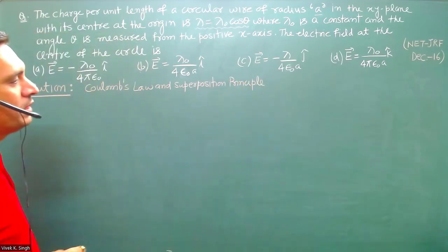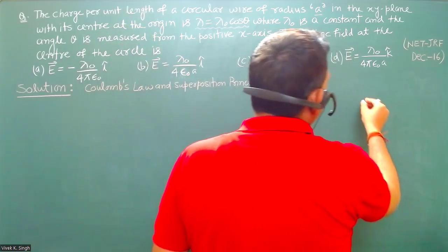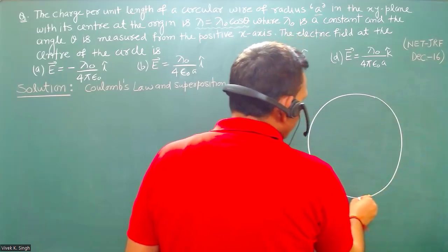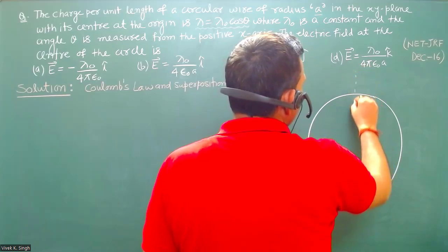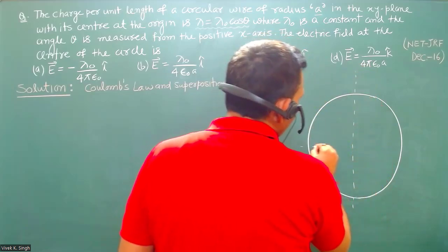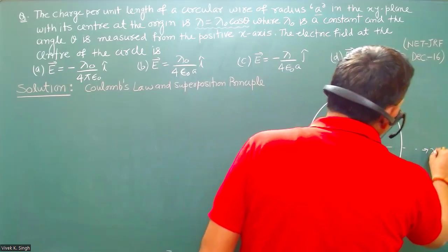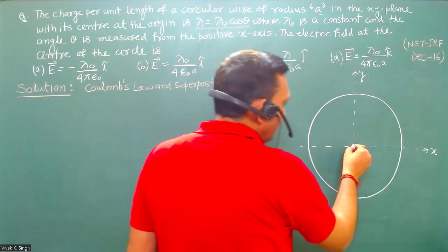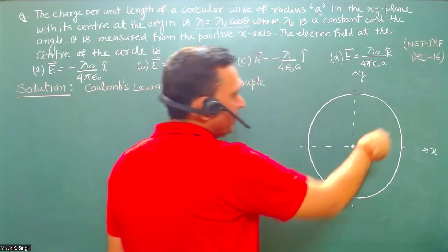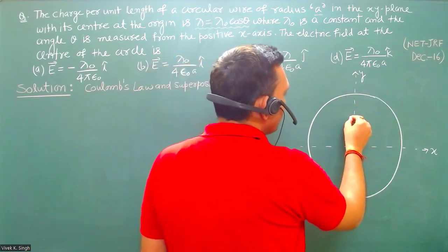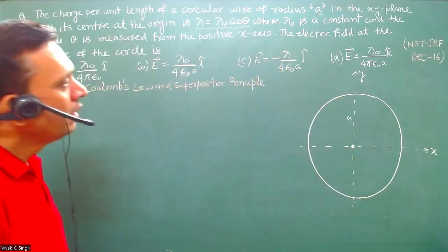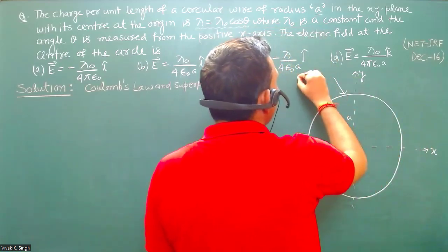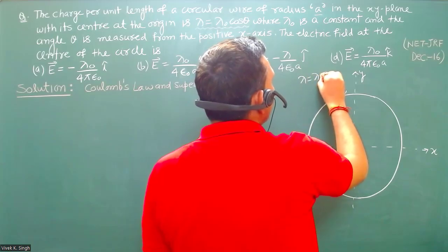We will first consider a circle in the xy plane. This is the x-axis and this is the y-axis. This is the center of the circle and its radius is A. The charge per unit length is given as lambda = lambda naught cos theta.